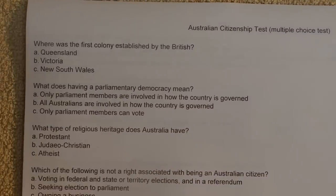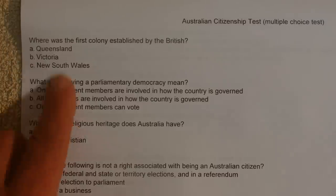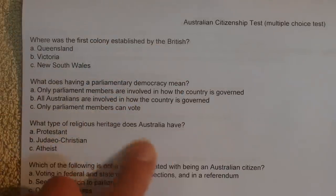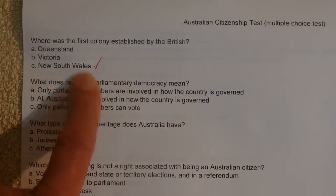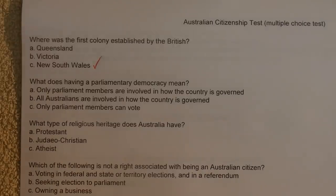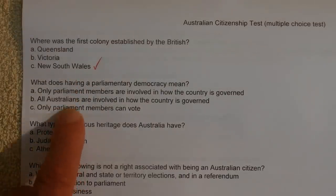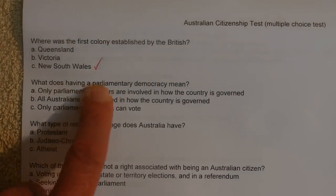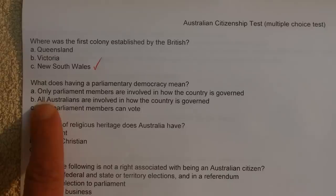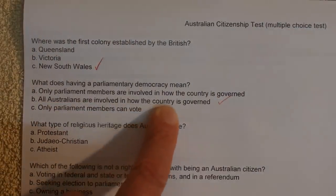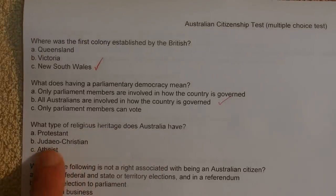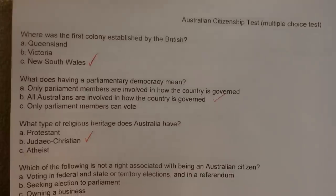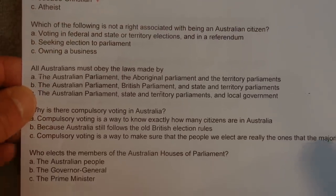Where was the first colony established by the British? In New South Wales. What does having a parliamentary democracy mean? Answer B: all Australians are involved in how the country is governed. What type of religious heritage does Australia have? The answer is Judeo-Christian.